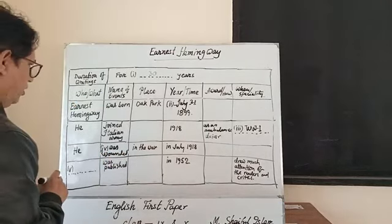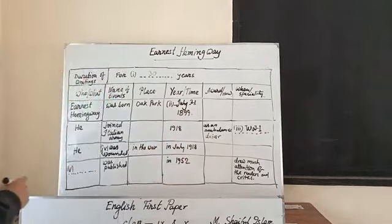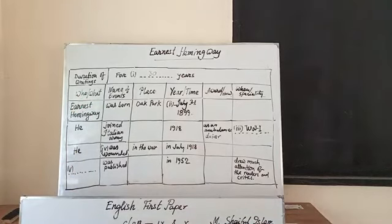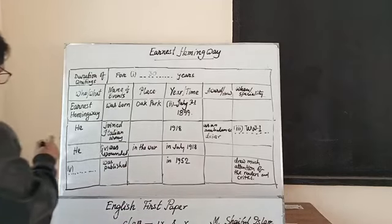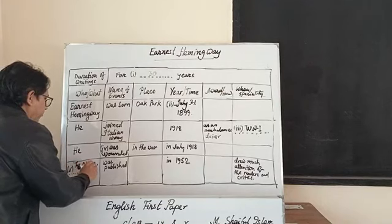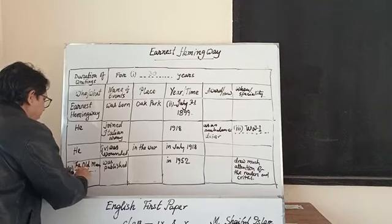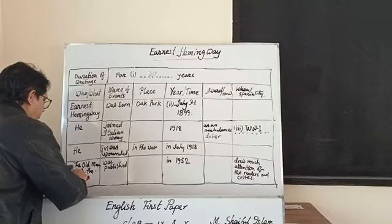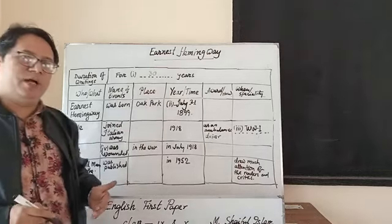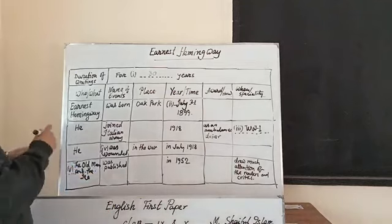He was wounded in the war in July 1918. The Old Man and the Sea was published in 1952 and drew much attention from readers and critics. So we have to think about who or what drew attention — which thing drew attention. It was The Old Man and the Sea, the great novel of Ernest Hemingway.